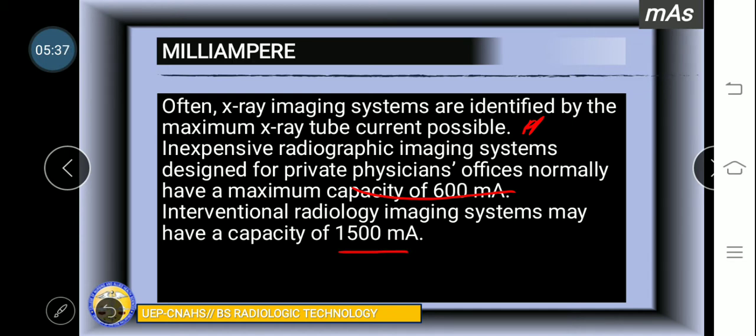Interventional radiology imaging systems may have a capacity of 1500 MA. Interventional radiology departments are like operating rooms in a way, because you perform interventional procedures. Examples include digital subtraction angiography, treating embolism and aneurysm. But here in region 8, I don't think we have IR. In Manila, there are many.